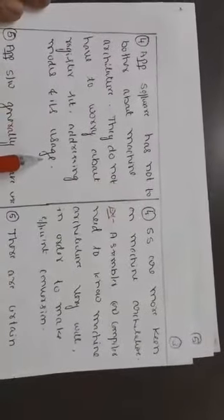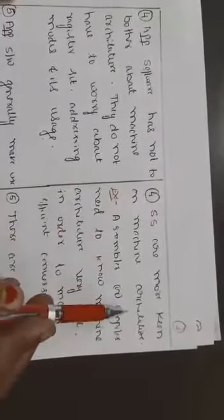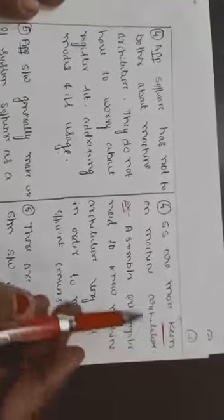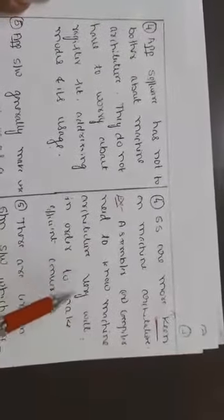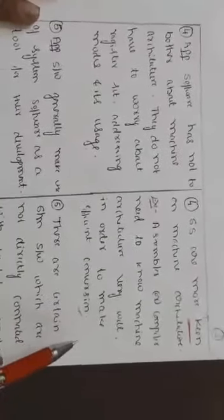Fourth point: Application software has not bothered about machine architecture. They do not have to worry about register set, addressing modes and its usage. System software are more keen on machine architecture, more dependent on machine architecture. For example, assembler or compiler need to know machine architecture very well in order to make efficient conversion. 8086 assembler will not work with some other processor architecture.